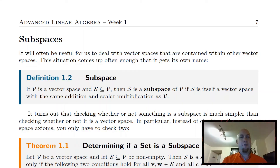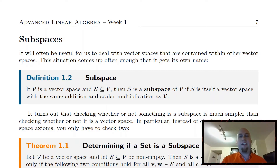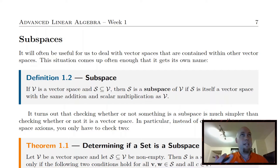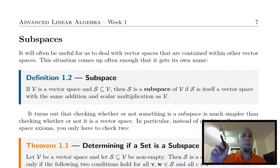Welcome to lecture two of Advanced Linear Algebra. This time we're going to talk all about subspaces. The idea behind a subspace is it's just a vector space that lives within another vector space. You actually saw subspaces back in your first linear algebra course, back when the only vector space you had in mind was R^n. A subspace was a thing like a line through the origin, a plane through the origin, or a hyperplane through the origin if you're in higher dimensions.